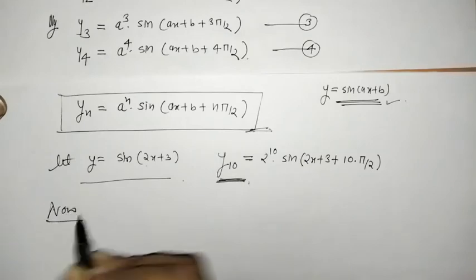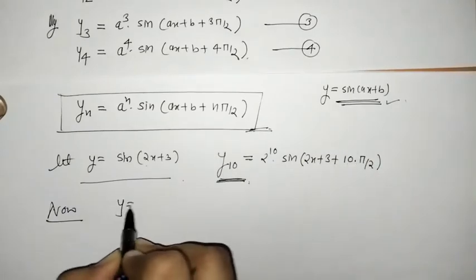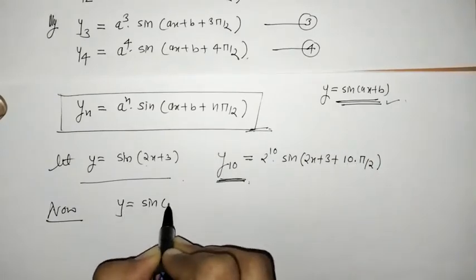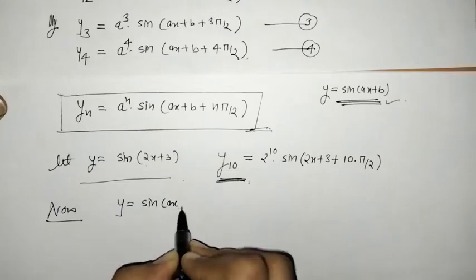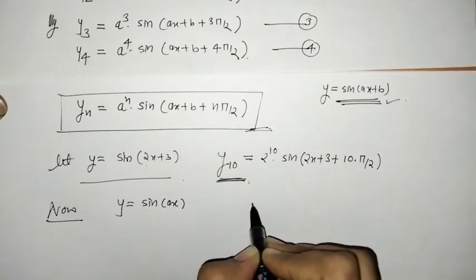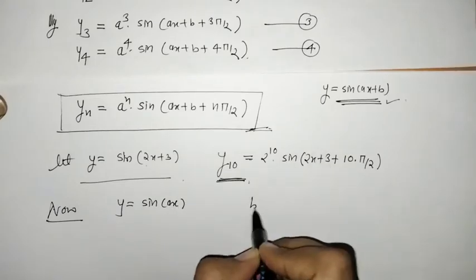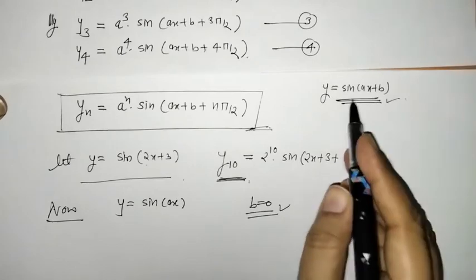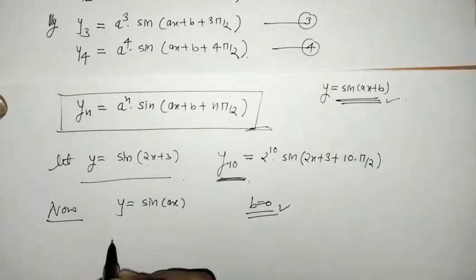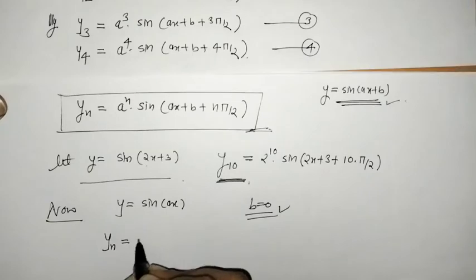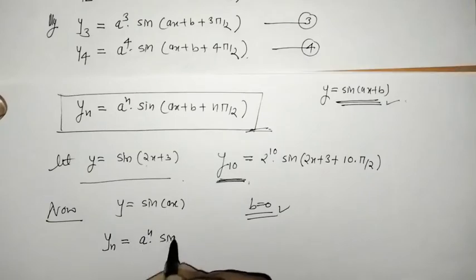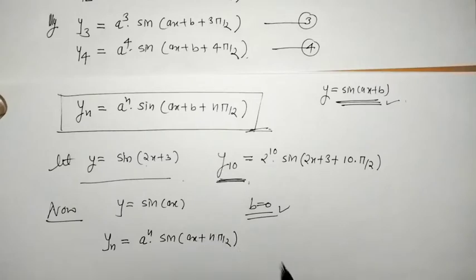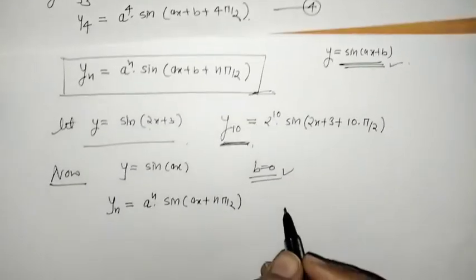Now consider the special case y = sin(ax), where b = 0. The nth derivative is yn = aⁿ·sin(ax + nπ/2).